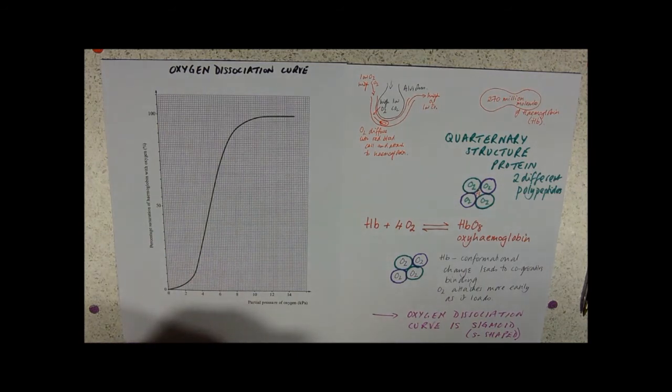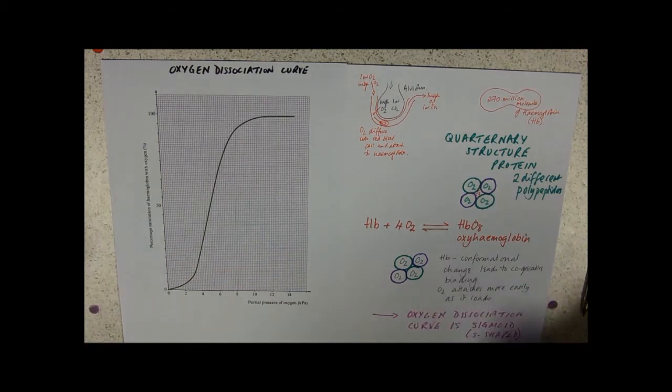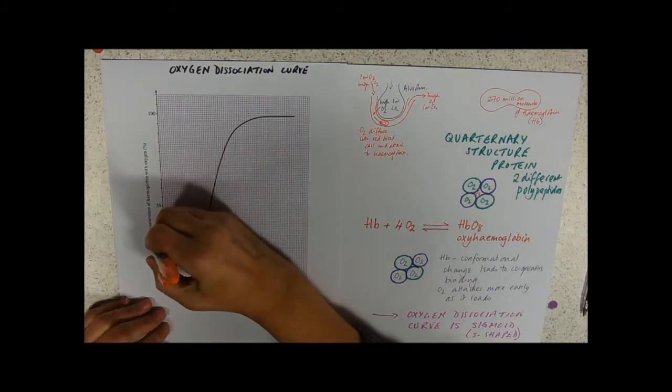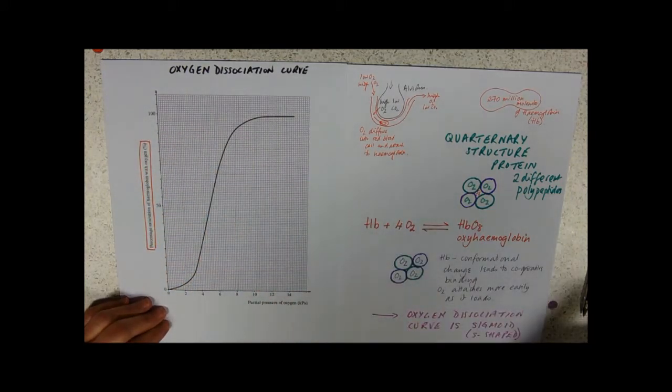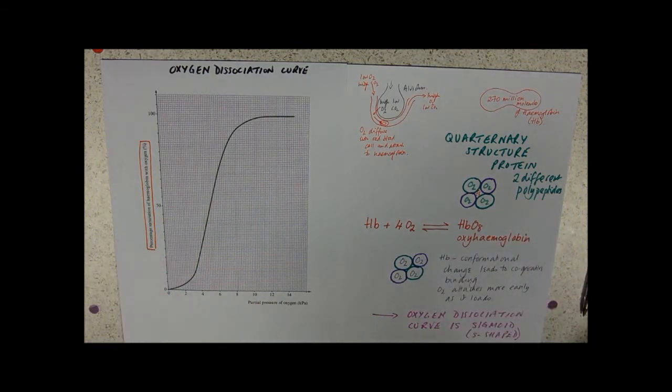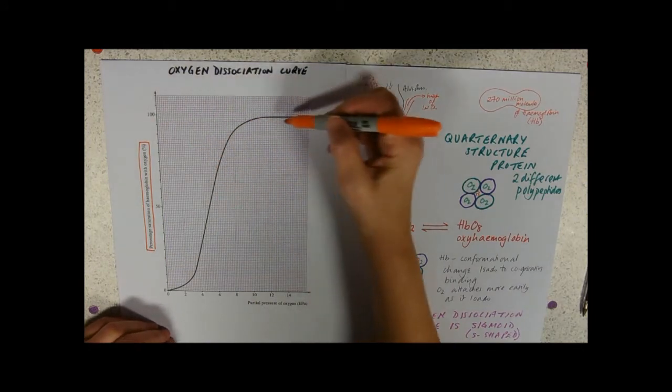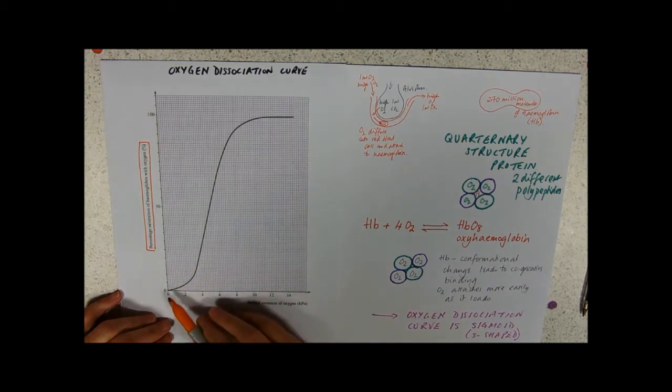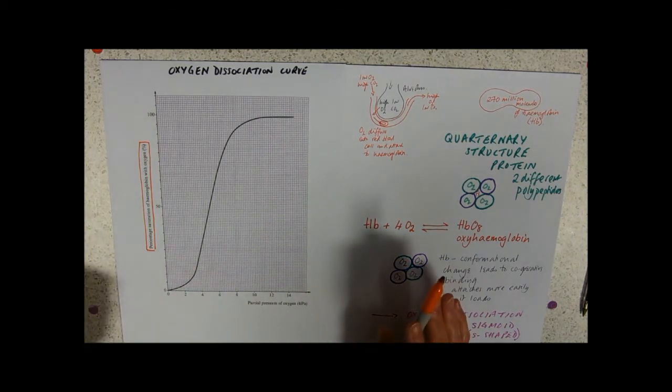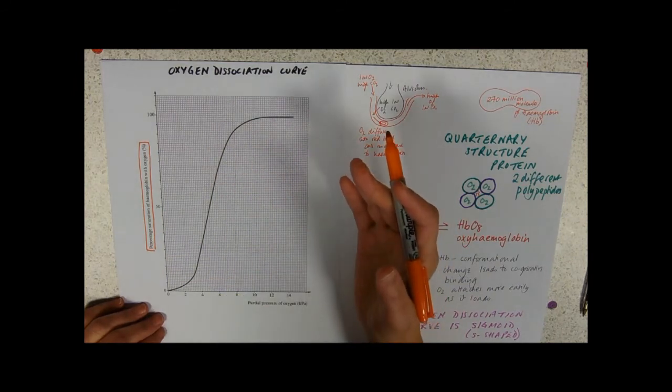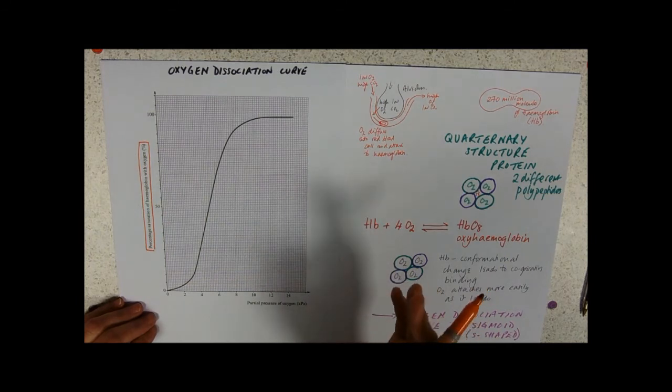When we're looking at any graph whatsoever, we need to look at the axes first. That's the absolute rule—look at the axes, work out what's going on. What have we got up the side? We've got the percentage saturation of hemoglobin with oxygen. The reason that it's as a percentage is each blood cell's got 270 million molecules, each one of those is carrying four oxygens—let's not deal in numbers, let's deal in percentages. At the top we've got 100%, that means all hemoglobin full of oxygen. At the bottom 0%, not carrying any oxygen at all. In the middle we've got some of the hemoglobin that's got oxygen attached and some of the oxygen is not attached to the hemoglobin.